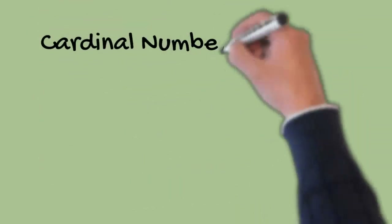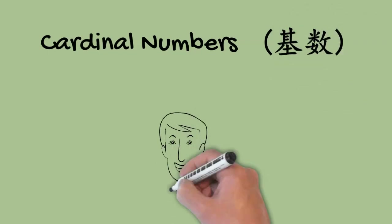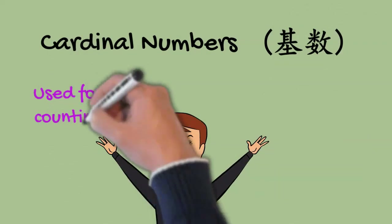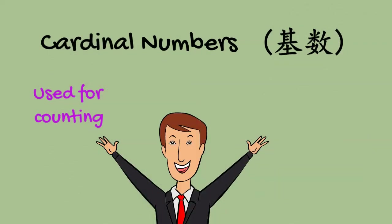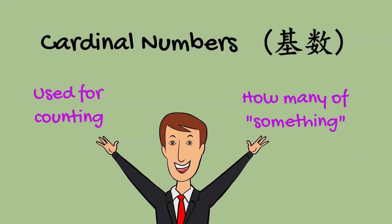First, we look at cardinal numbers. Cardinal numbers are used to count things. They tell how many things are in a place.